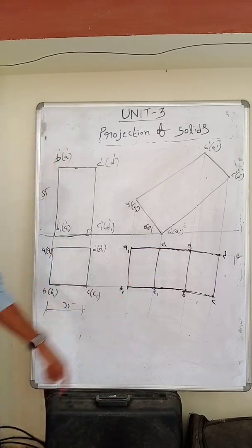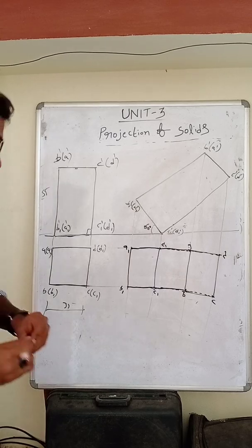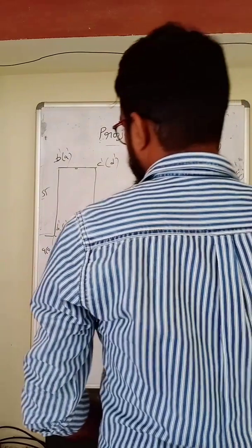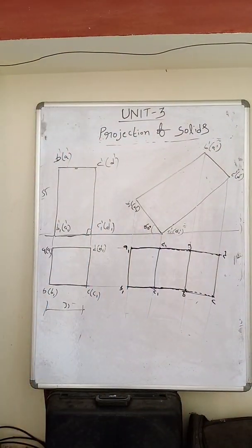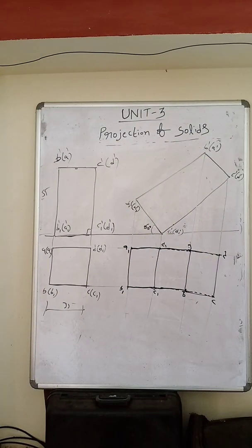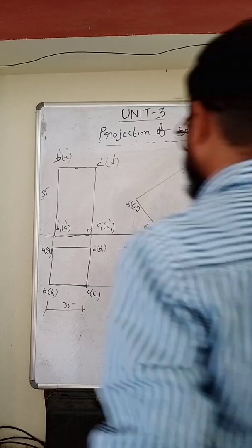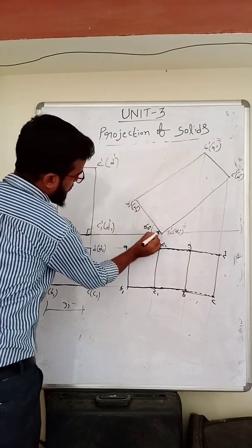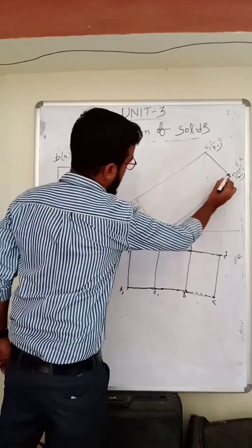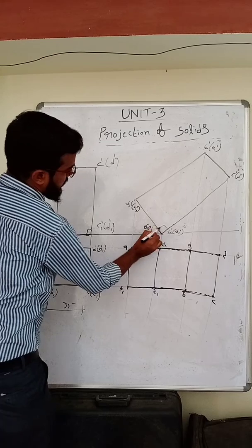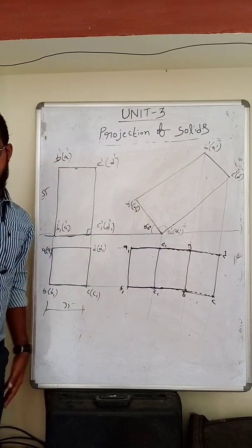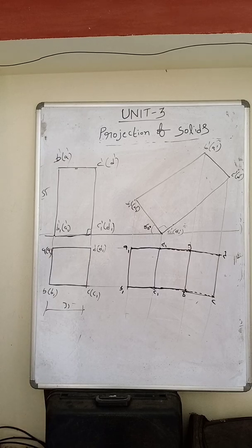C1 to C thin lines represent the visible object. This length should be equal to this length, and this length should be equal to this length, and this angle should be equal to this angle. Don't forget these points.